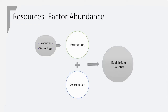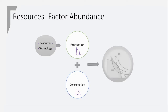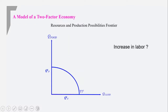Now we're going to express both the production side and the consumption side. The production side is the production possibility frontier, and the consumption side is the indifference curves — and that gives us the equilibrium for the home country. So let's begin.